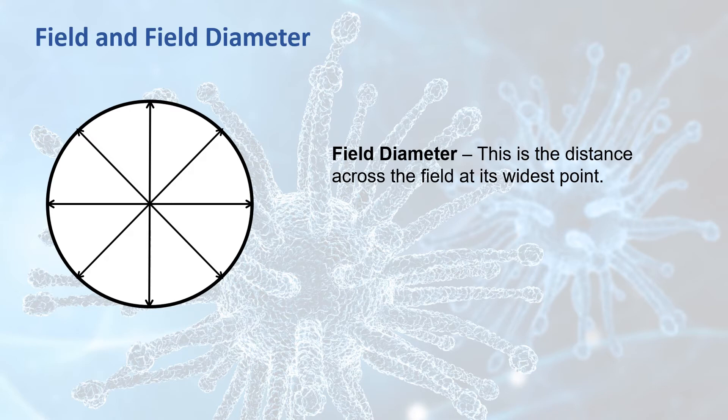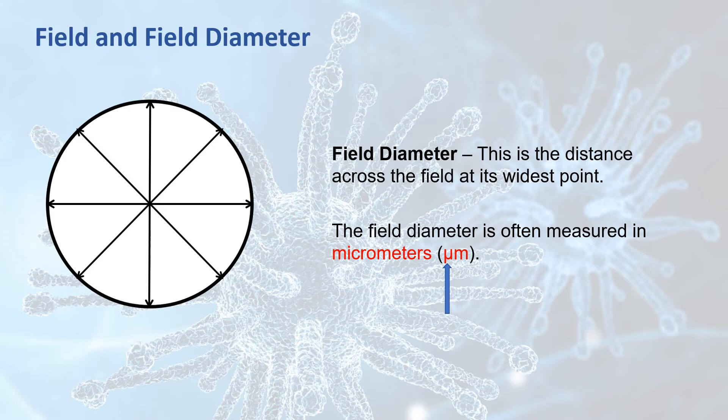Because we are dealing with such small distances when we talk about field diameters, the field diameter is often measured in micrometers. Now, most of you will never have measured in micrometers before. The symbol for micrometers starts with what looks like a fancy U with a tail hanging down at the front. That's the Greek letter mu and ends with M, just like we're used to seeing for metric units. How small is a micrometer? Well, one micrometer is equal to one one thousandth of a millimeter. So just imagine chopping a millimeter up into a thousand equal slices and taking one of those slices. Another way of putting it is saying that one millimeter is equal to a thousand micrometers.